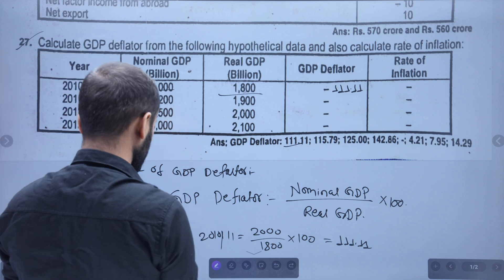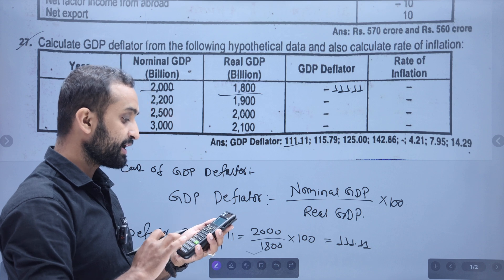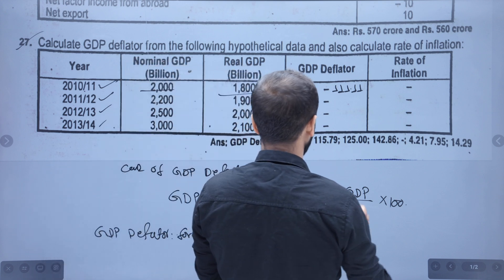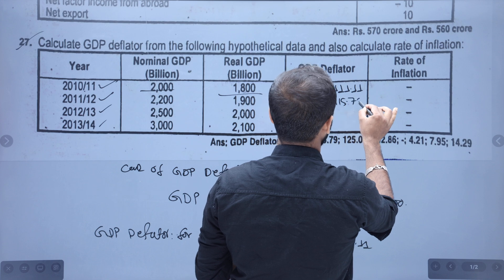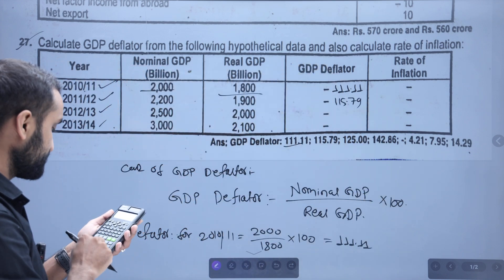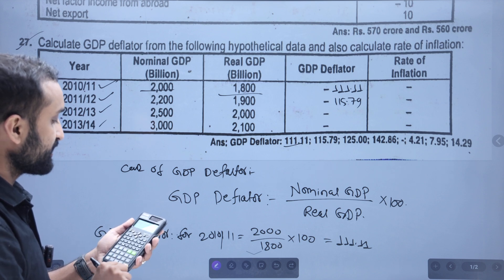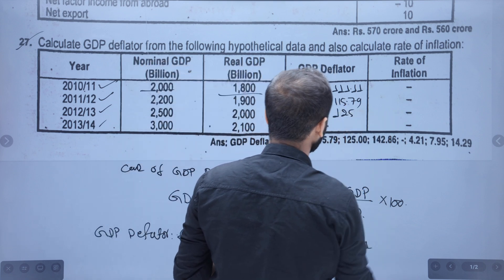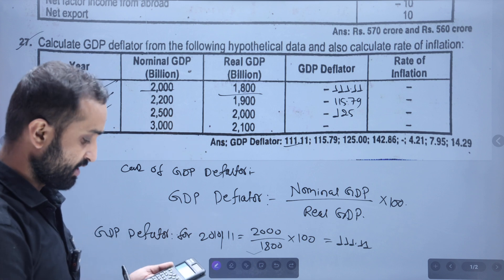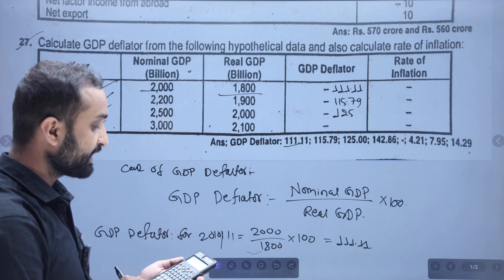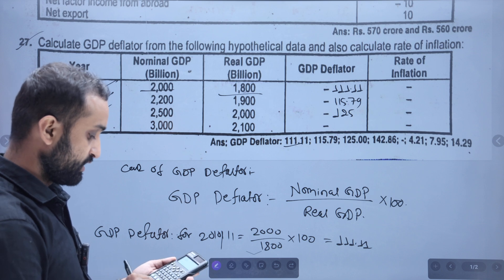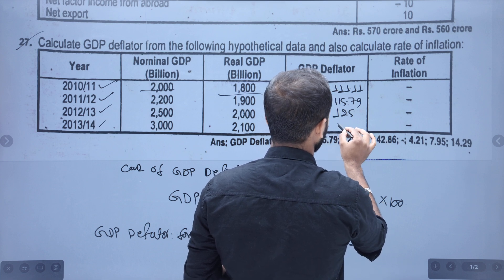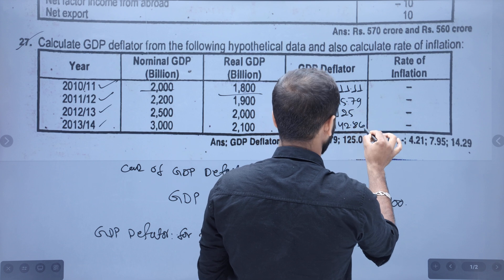Nominal GDP divided by real GDP into 100. The answer is 15.79. For the next year with nominal value and real value, GDP deflator is 25. For 2031, nominal GDP divided by real GDP into 100 gives us 22.86, which is our answer.